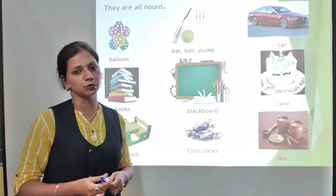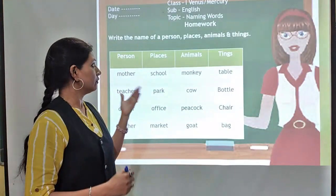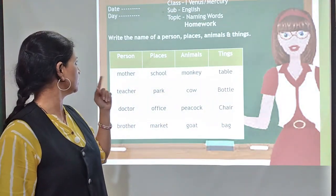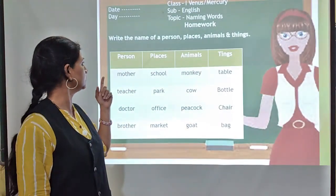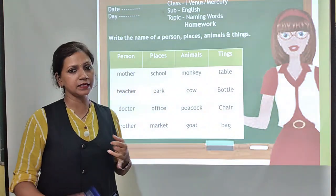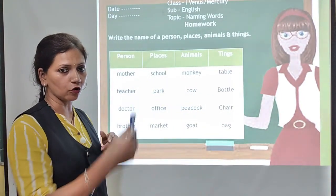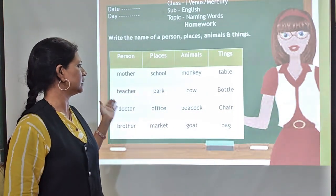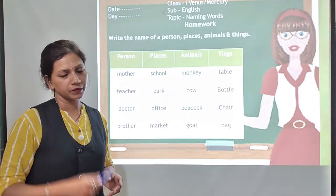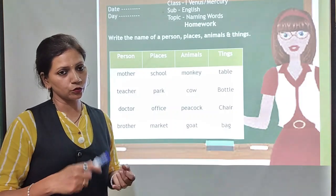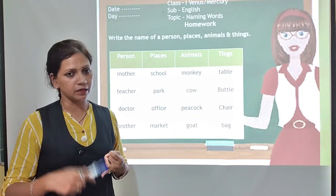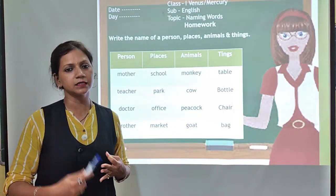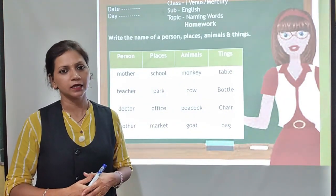I hope you understood. For homework, write today's date, day, and homework heading, then write down the instruction: write the names of a person, place, animal, or thing — make four columns in your notebook. To recap: a noun is a naming word. The name of a person, place, animal, or thing is called a noun. Thank you.